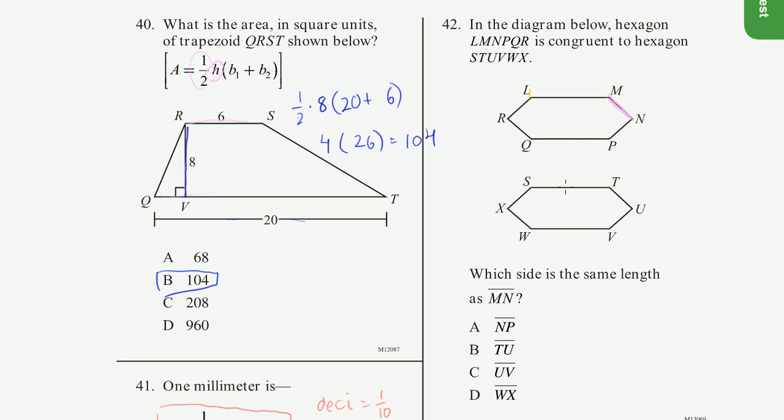And then they say, S, T, U, V, W, X. So they're not confusing us. These points do correspond. S corresponds to L, M corresponds to T, and so forth and so on. So this segment is going to be congruent to that segment right there, segment TU. So MN is the same length as TU. So that is choice B.